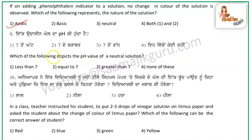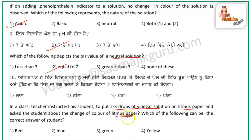Which of the following depicts the pH value of a neutral solution? In a class, the teacher instructed students to put 2-3 drops of vinegar solution on litmus paper and asked about the change in color. The litmus paper is blue; when vinegar is added, it turns red.